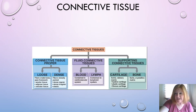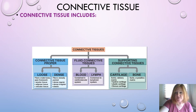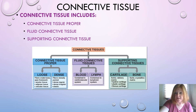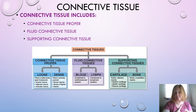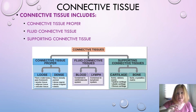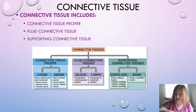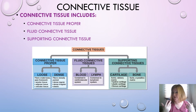Let's move on to connective tissue. Connective tissue includes three main categories: connective tissue proper, fluid connective tissue, and supporting connective tissue. You can see a chart here that lists those, and we will cover this in greater detail when we do connective tissue exclusively.